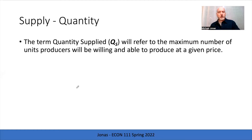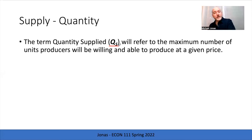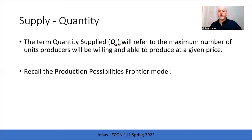On the quantity side, borrowing the notation from demand where we represented quantity as Q sub D, here we use Q sub S — the number of units produced per unit of time at a specific price. We can think of it as an answer to an if-then statement: if you offer me this price, this is the maximum number of units I'll be able to supply.